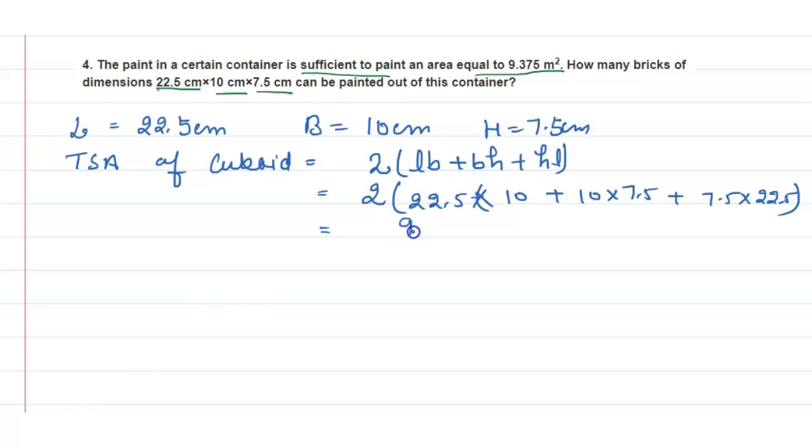Now when it is converted into meter, it will be divided by 10,000 because here centimeter square, so two times we will divide with 100. So here 937.5 divided by 10,000 which is equals to 0.09375 meter square.